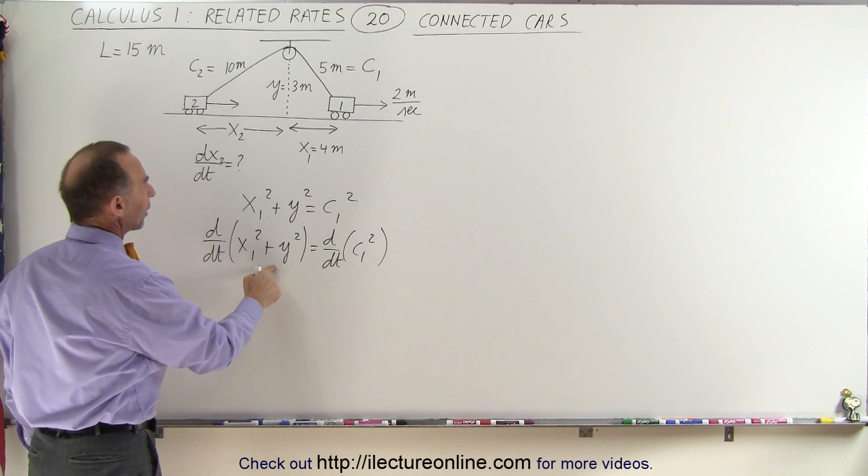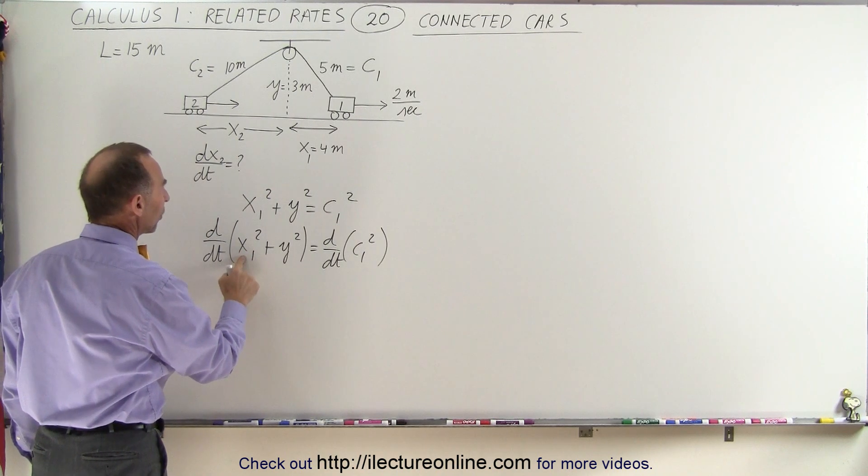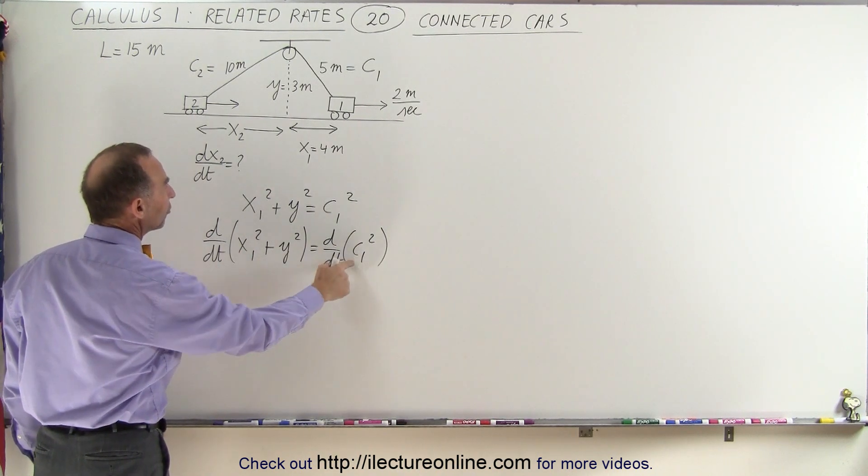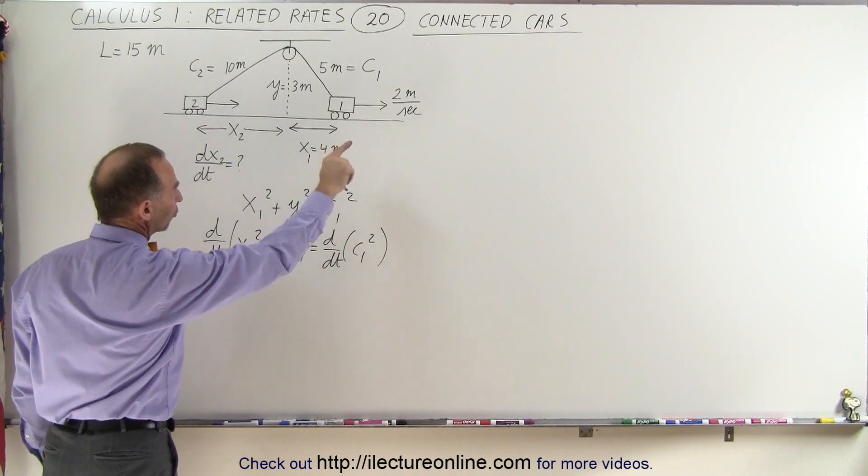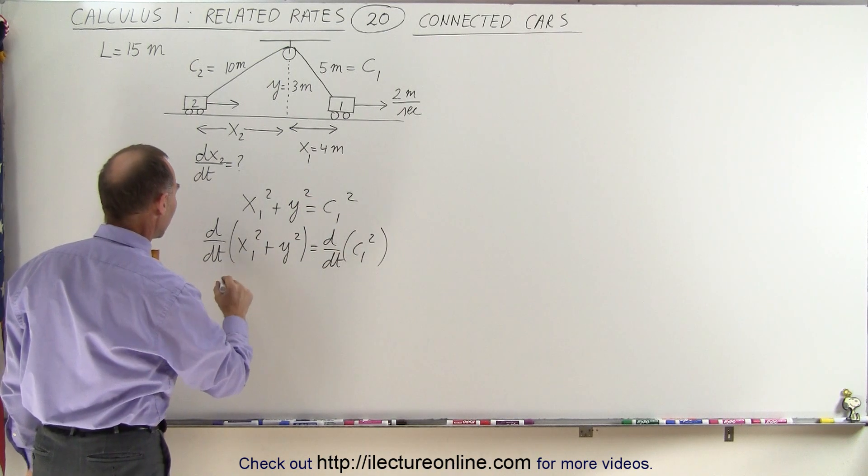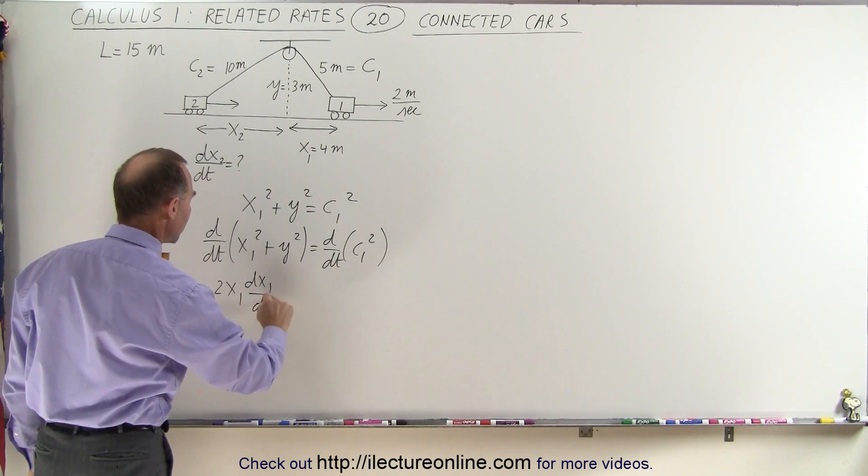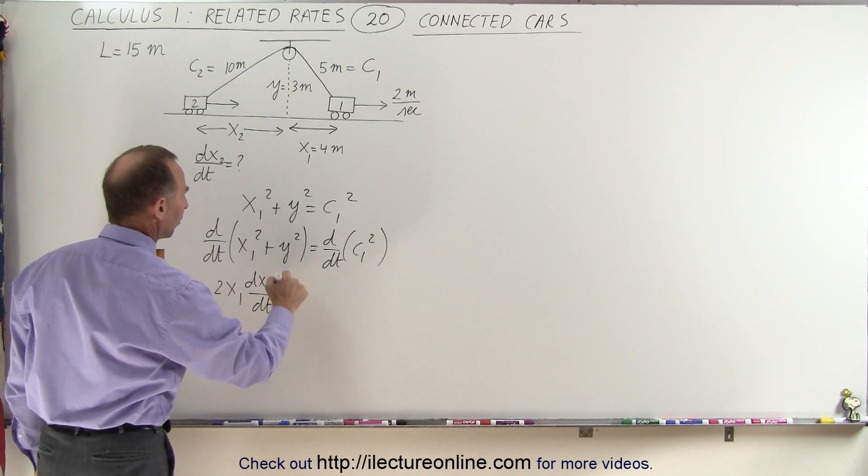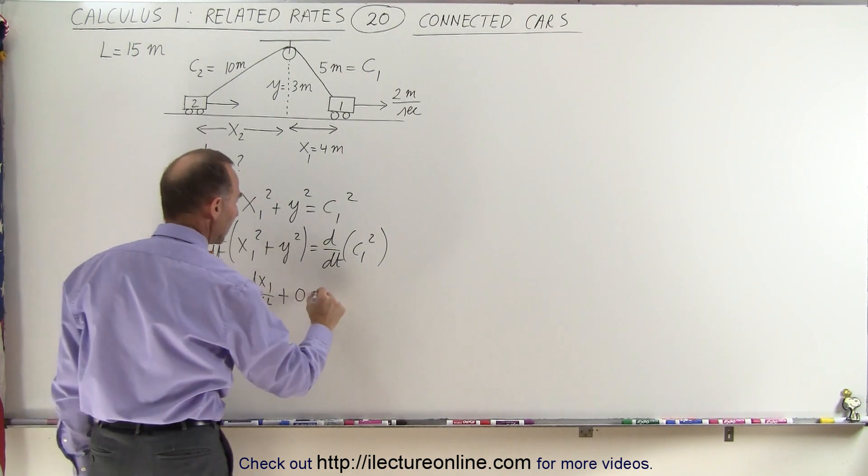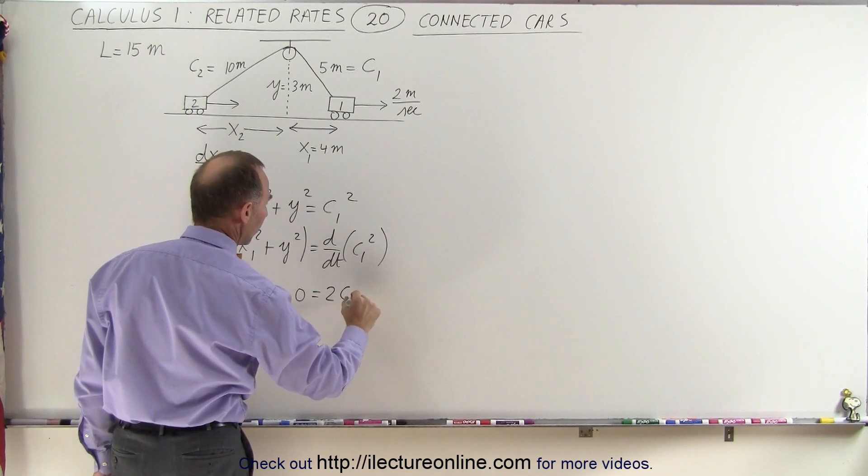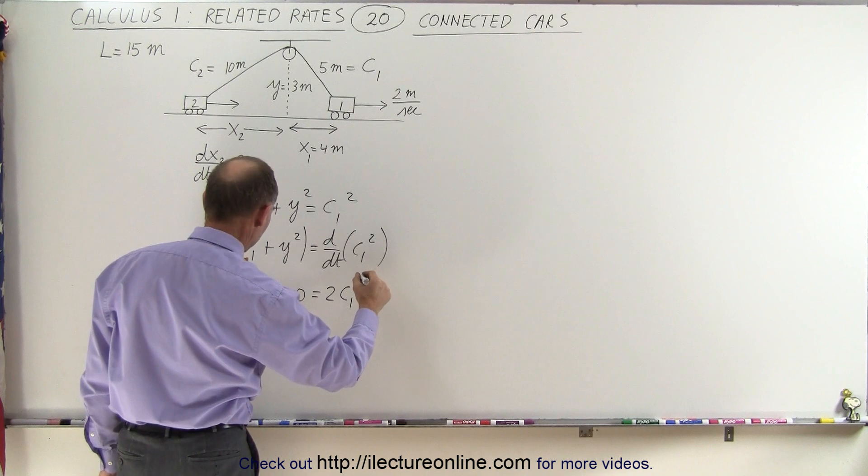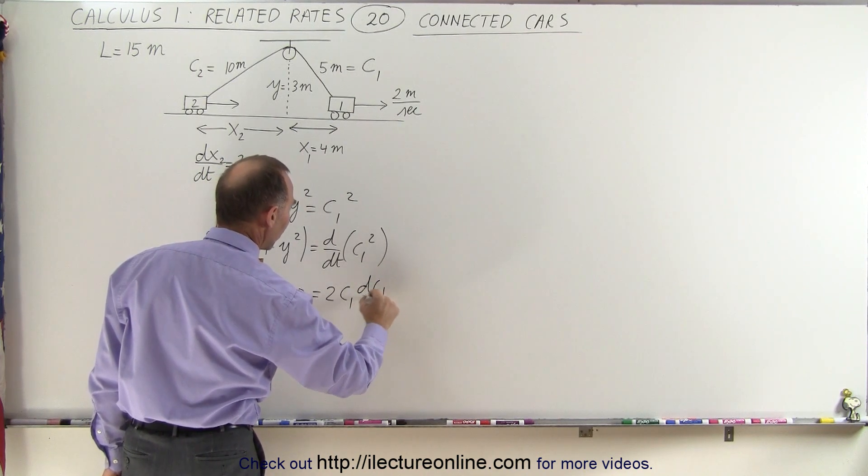Now notice that y is not going to change but x1 will change and c1 will change as the car's moving to the right. Which means that we have 2x1 dx1 dt plus 0 because y is not changing equals 2c1 to the first power times dc1 dt.